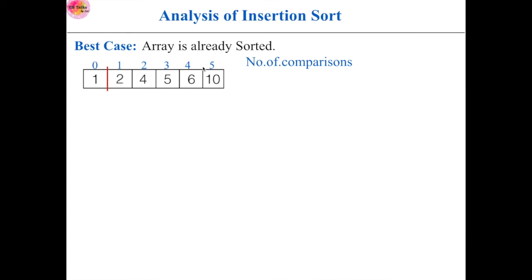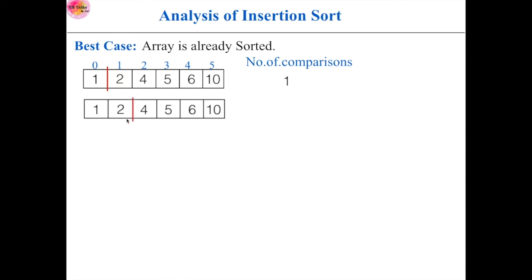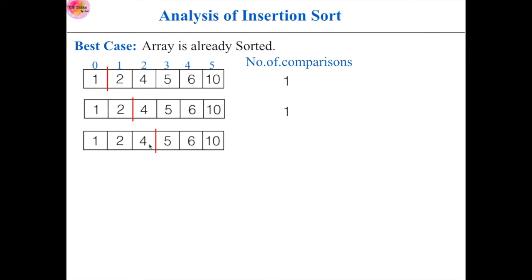This is our sorted part and this is our unsorted part. Now 2 is compared with 1 — here, 2 is already in its correct position, so no need for any swapping. For this element, we did only one comparison. Next, this is our sorted part and this is our unsorted part. Again, 4 is compared with 2 — here, 4 is already in its correct position, so no need for any swapping. For this element, we did only one comparison. Again, 5 is compared with 4 — here, 5 is already in its correct position, so no need for any swapping or any movements. The number of comparisons is 1.